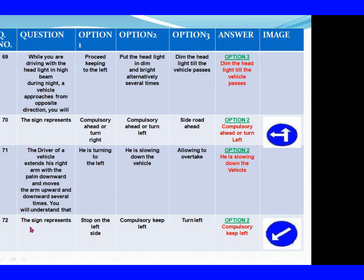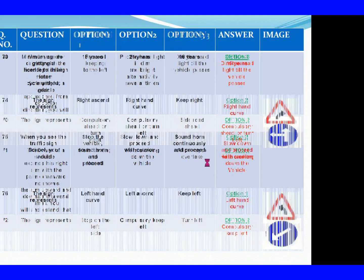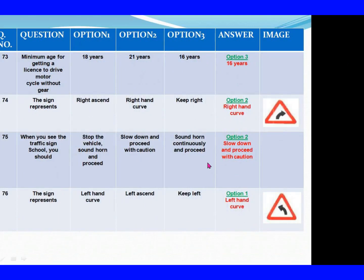Question 72: The sign represents. Option 1: Stop to the left side. Option 2: Compulsory ahead or turn left. Option 3: Turn left. The right answer is Option 2: Compulsory keep left. Question 73: Minimum age for getting a license to drive a motorcycle without gear. Option 1: 18 years. Option 2: 21 years. Option 3: 16 years. The right answer is Option 3: 16 years.